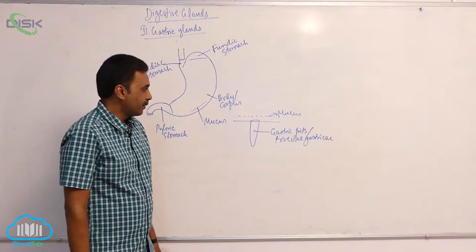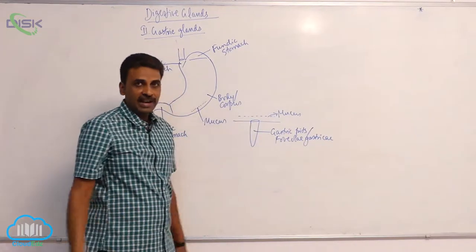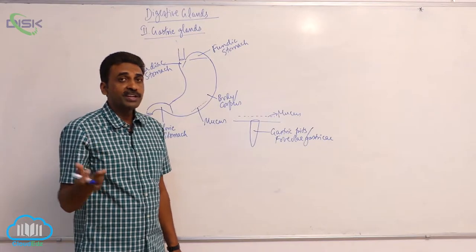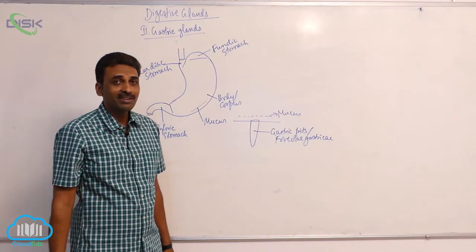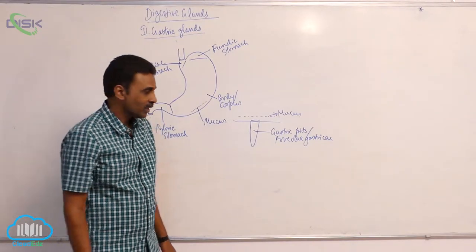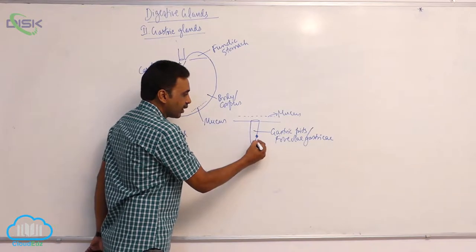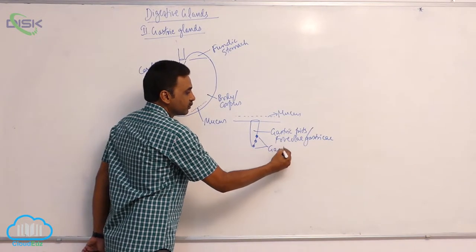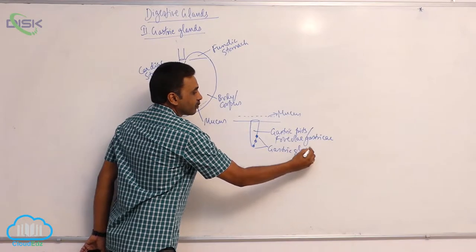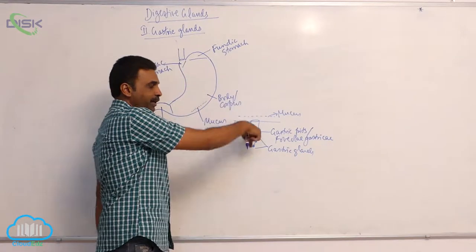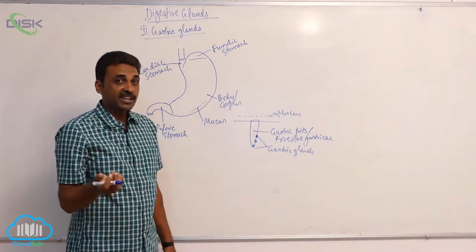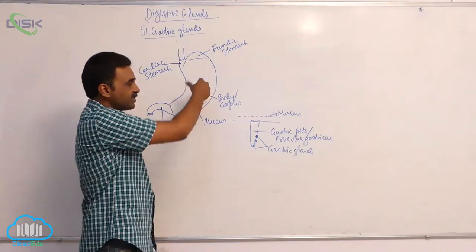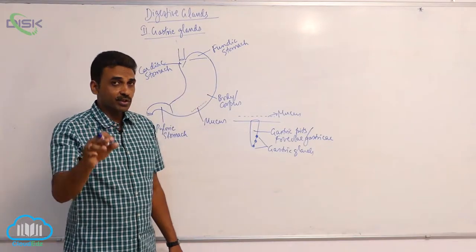These are tubular glands. In one square millimeter, there are up to 90 to 100 gastric pits, and in each pit there are up to three to seven gastric glands. So that is the location — inside the mucosa of the stomach.